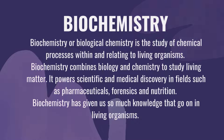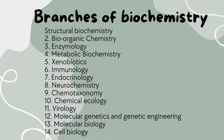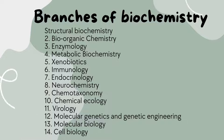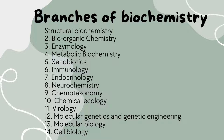What are the branches of biochemistry? Number 1 is structural biochemistry, 2 bioorganic chemistry, 3 enzymology, 4 metabolic biochemistry, 5 xenobiotics, 6 immunology, 7 endocrinology, 8 neurochemistry.